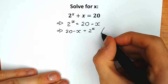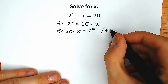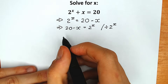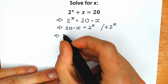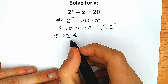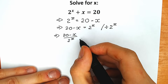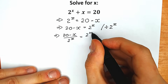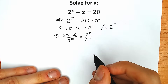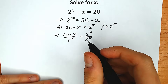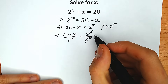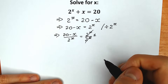Right now let's divide both sides by 2 to the power x. We have 20 minus x on the left side divided by 2 to the power x, and we have 2 to the power x divided by 2 to the power x on the right side. We can easily cancel those, and as a result we have 1 on the right side.